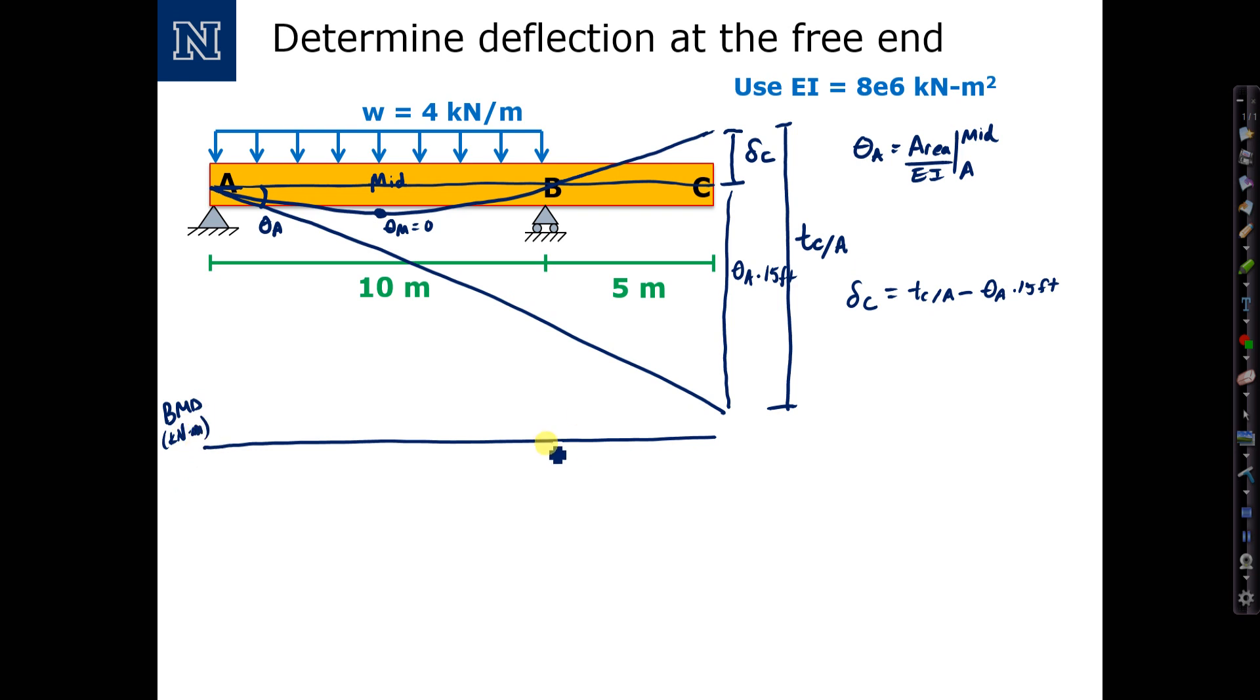I know there's no moment over the unloaded end of the beam. Between the two supports, the moment diagram is curved like this with a peak at the midpoint, which is equal to WL squared over 8.